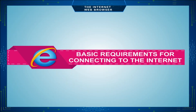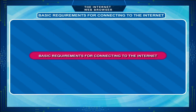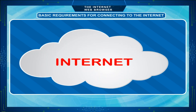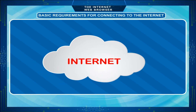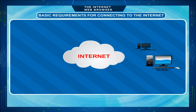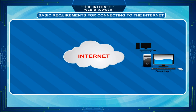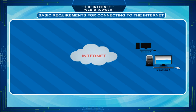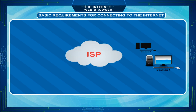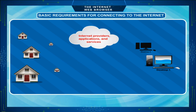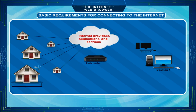Basic Requirements for Connecting to the Internet. The basic requirements for connecting to the internet are: a computer device, ISP, a working internet line and modem for that internet line.